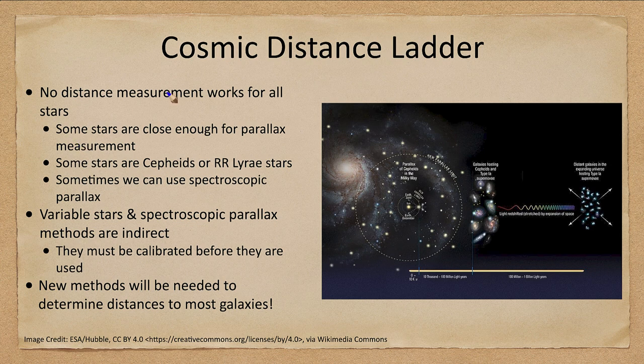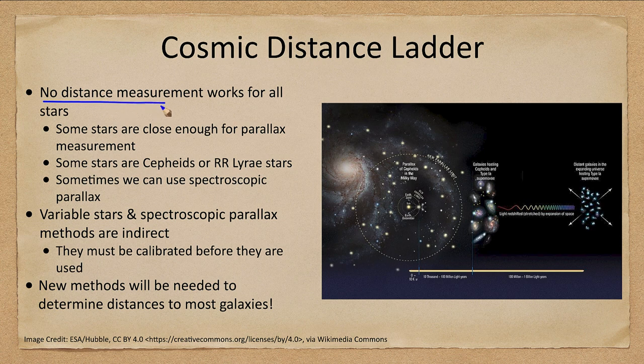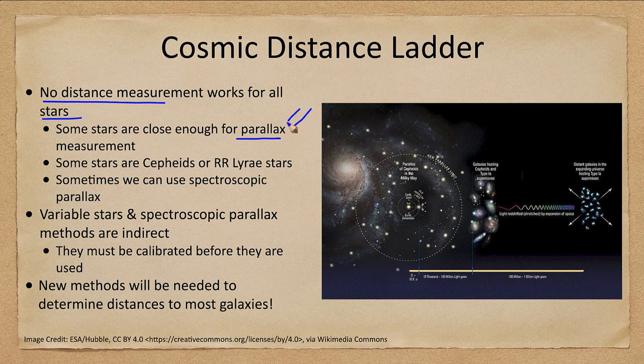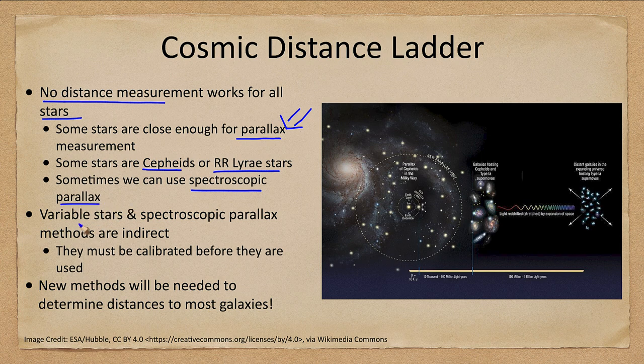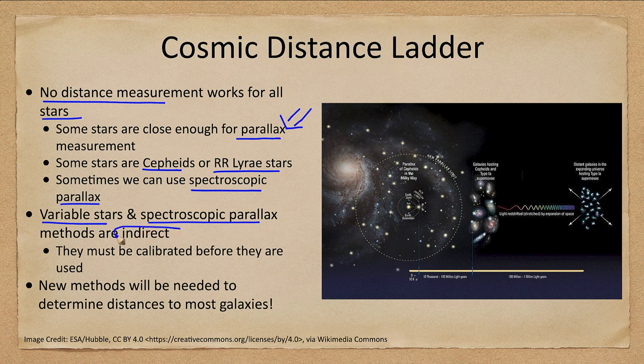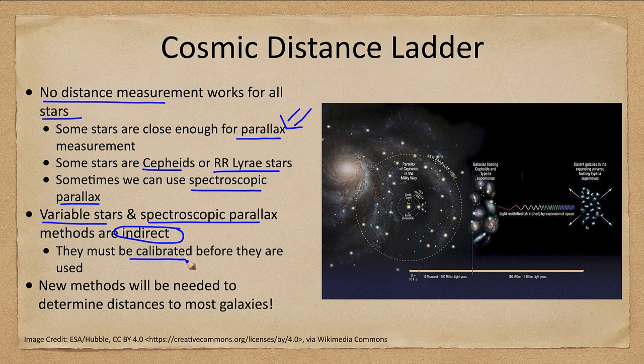We then look at what we call our cosmic distance ladder, because no distance measurement will work for all stars. Some stars are close enough that we can use parallax. With Gaia, that is expanding. Some stars are Cepheids or RR Lyrae stars. Sometimes we can use spectroscopic parallax. But we have to remember that variable stars and spectroscopic parallax are indirect, meaning they have to be calibrated before they are used.